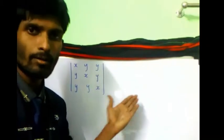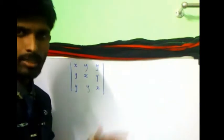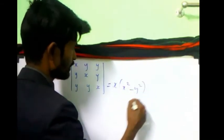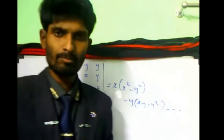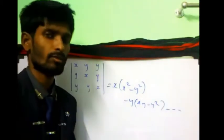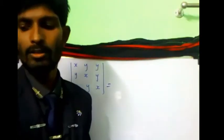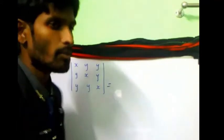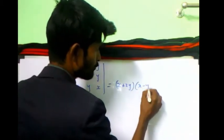Now I'll write the answer very directly without solving anything. Previously we would take the modulus and expand: x into x² minus y², then minus y into xy minus y², etc., by expanding the whole matrix. We don't require this because we're not going for theoretical examination; we're going for objective type. I'll skip everything and write only the last step.